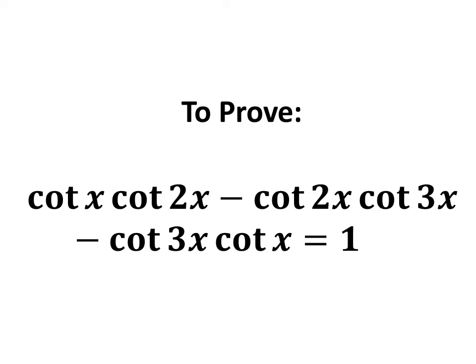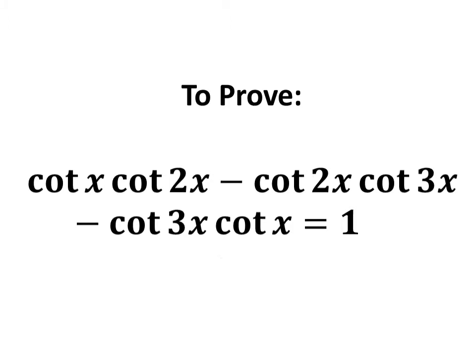In this video we will learn to prove the equation: cotangent of x times cotangent of 2x minus cotangent of 2x times cotangent of 3x minus cotangent of 3x times cotangent of x is equal to 1.